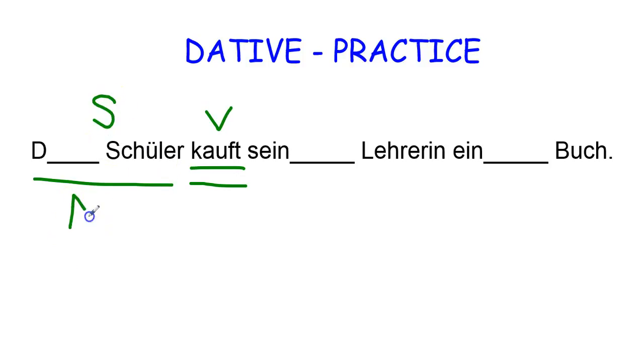The subject of the sentence is known in German as the nominative case. So, der Schüler kauft. The male student buys who or what? The male student buys a book. A book is now the accusative case, direct object.